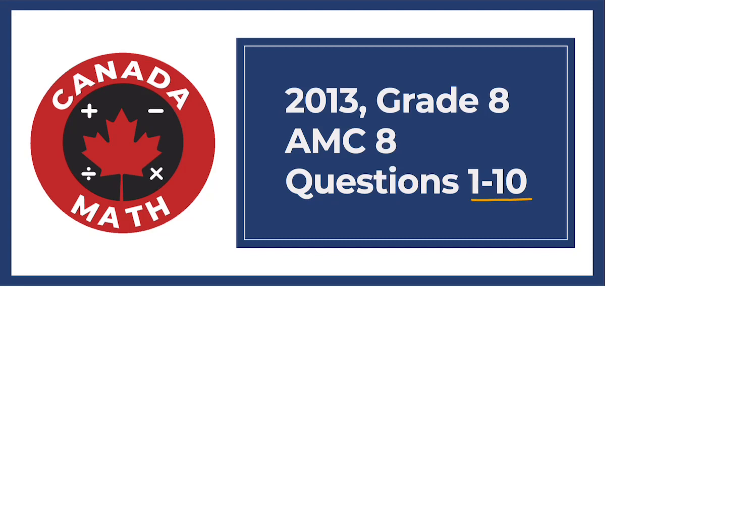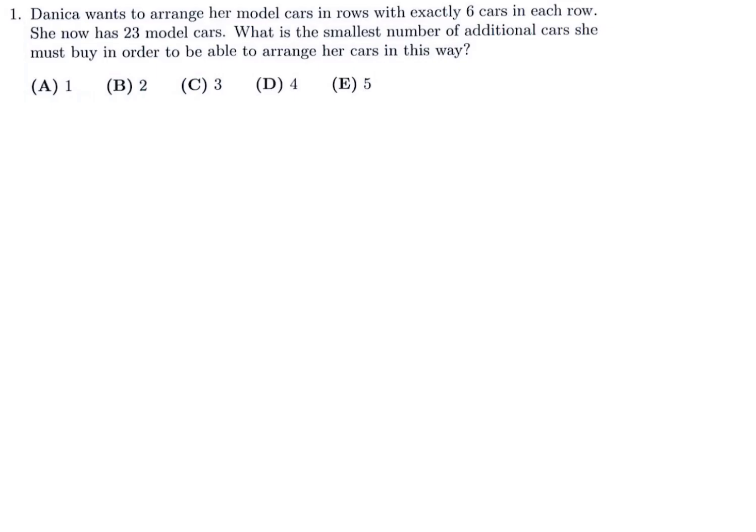Questions 1 through 10 on the 2013 Grade 8 AMC 8. Danica wants to arrange her model cars in rows with exactly 6 cars in each row. She now has 23 model cars. What is the smallest number of additional cars she must buy in order to be able to arrange her cars in this way?